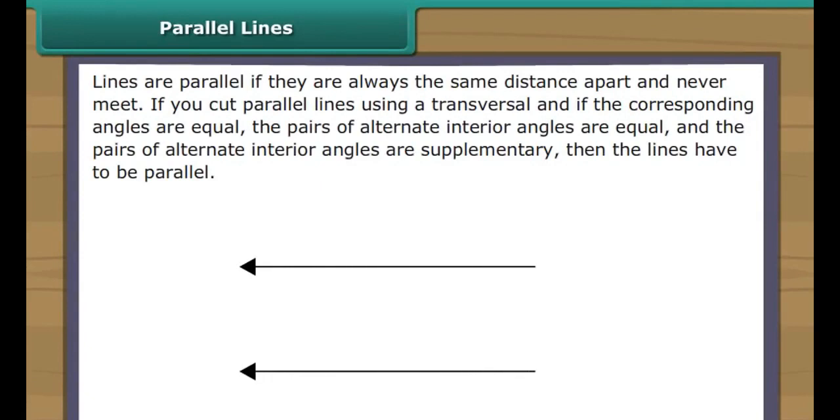Parallel lines. Lines are parallel if they are always the same distance apart and never meet. You can also check if lines are parallel by cutting the lines using a transversal. If the corresponding angles are equal, the pairs of alternate interior angles are equal, and the pairs of interior angles are supplementary, then the lines have to be parallel.